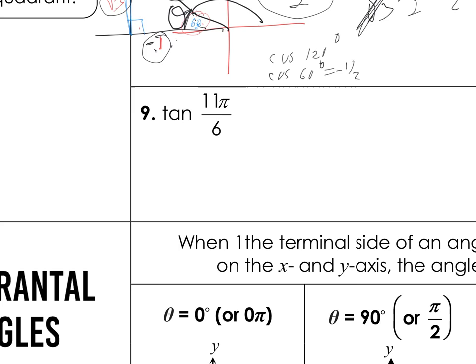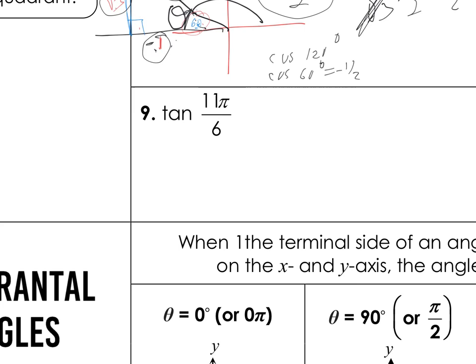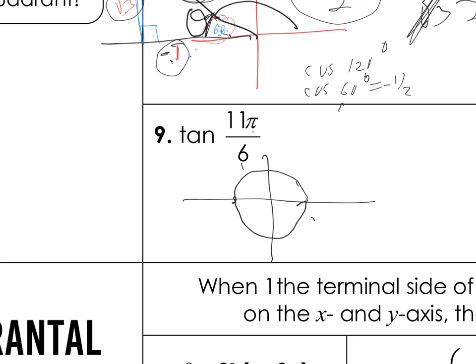Number 9: tangent of 11 pi over 6. Pi over 6 means 30 degrees, so there are 12 of them in a full circle. Going through 6 takes you halfway, and going all 12 completes the circle. So 11 pi over 6 means I count off 11 of the 30-degree segments — stopping at the 11th one.